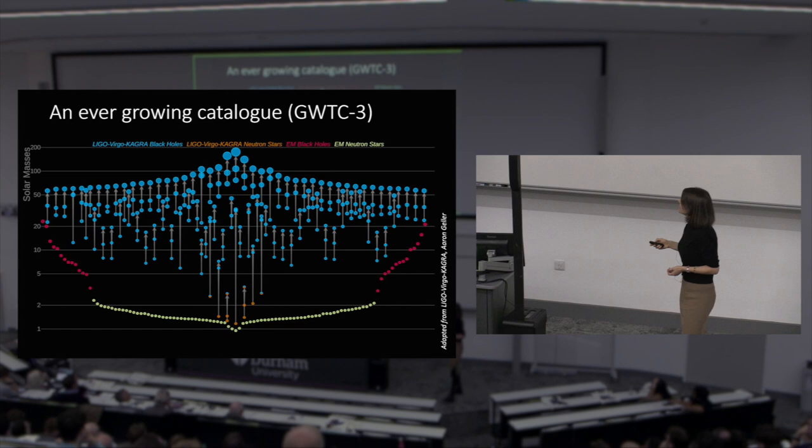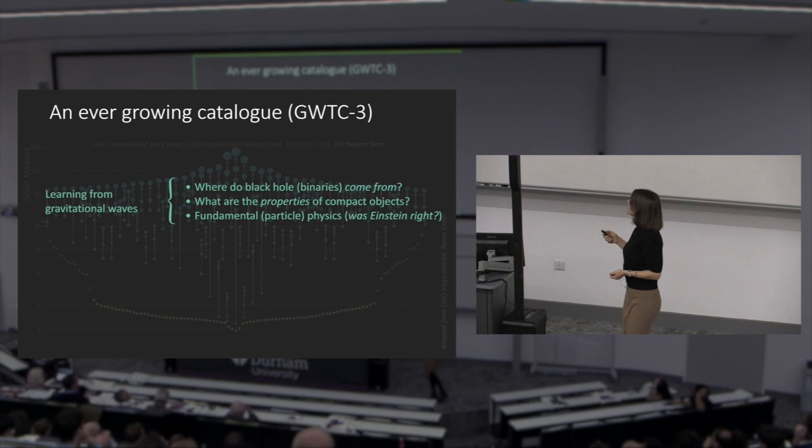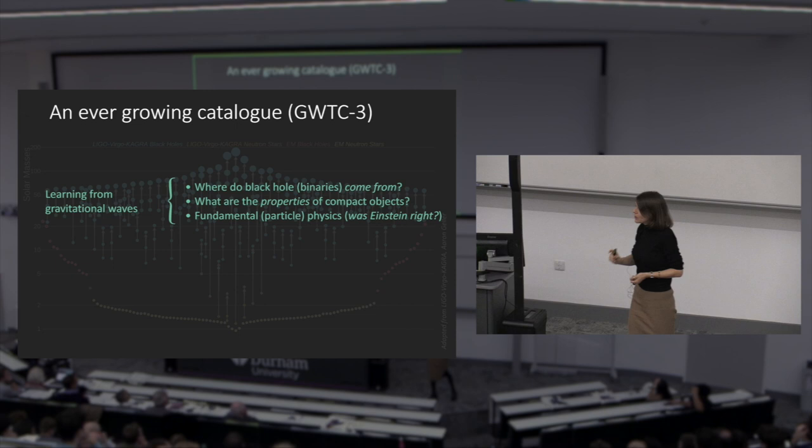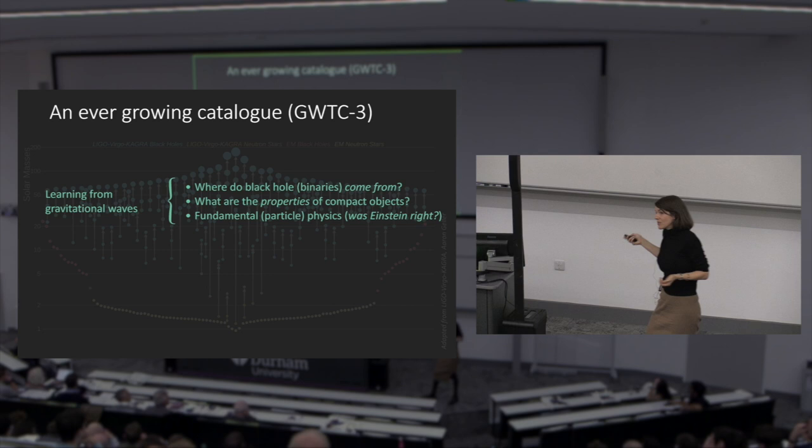Now this catalog is big enough that we can do science with it, which I find really interesting. You can ask a few questions and learn many things from gravitational waves. Where do these black hole binaries come from? That's a fascinating question. What are the properties of the compact objects, both neutron stars and black holes? From that, you can start to answer questions about fundamental physics, including the question of whether Einstein was right, but also other questions about particle physics and new particles.